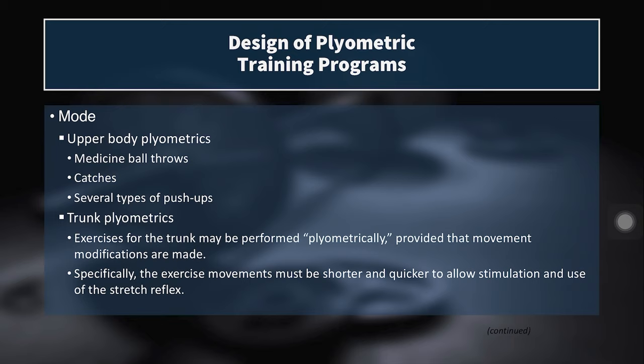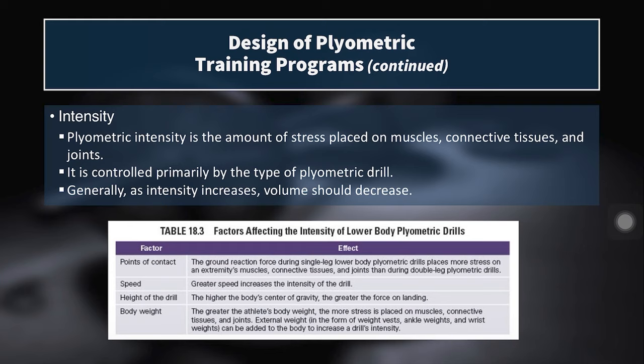Trunk plyometrics involve core training exercises that are isotonic in nature and performed plyometrically with some movement modifications. For example, instead of a standard Russian twist, you could use a med ball against a wall and let it bounce back, making the twist more reactive. Or instead of a standard crunch, you could do an overhead ball toss from a crunching position, throwing the ball as far as possible. Another variation has a partner forcefully push your legs down during leg raises, requiring you to decelerate and then pull the legs back up.